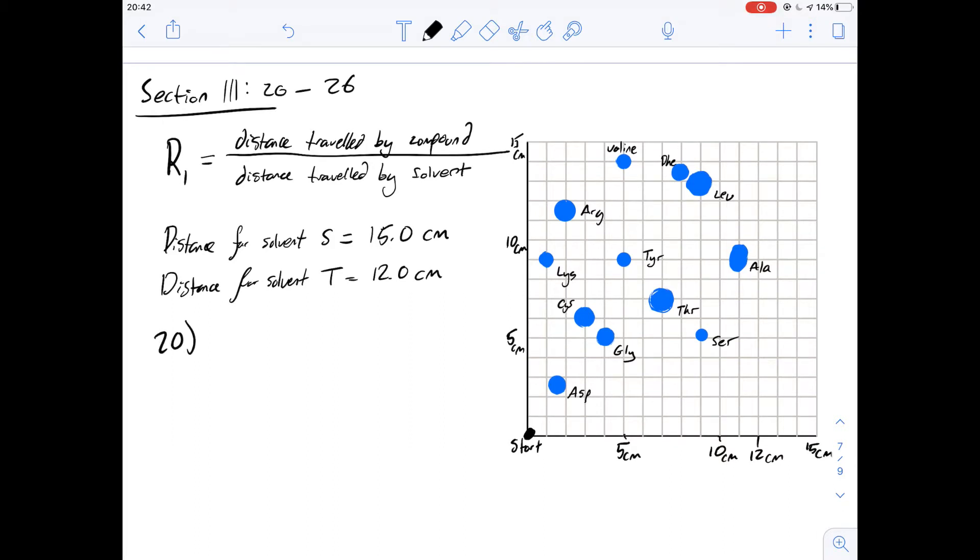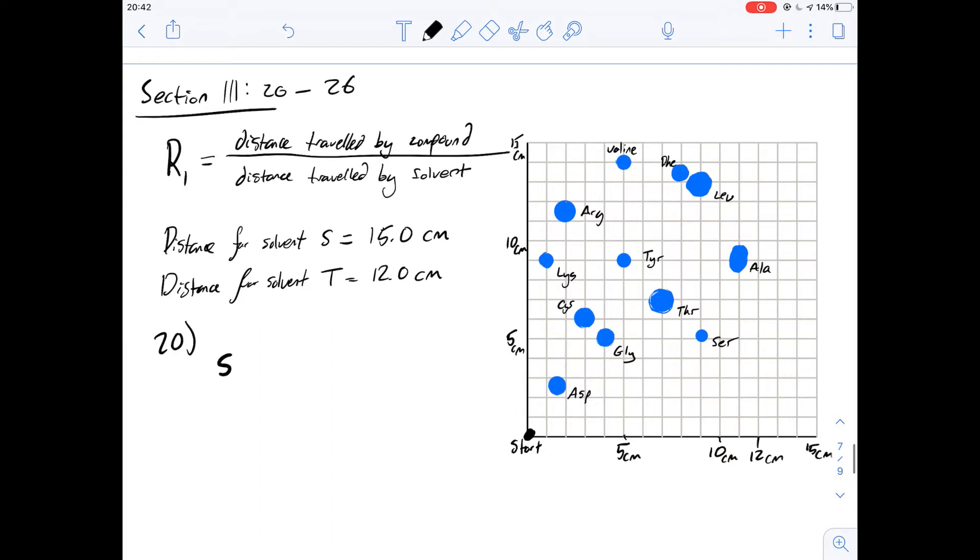I've copied out the diagram and it means we can start by answering question 20 which asks the R1 value of cysteine on this paper in each solvent. So we've been told what the equation is for R1 in case you didn't know it, and in this case it's just a matter of counting the squares and finding the ratios.